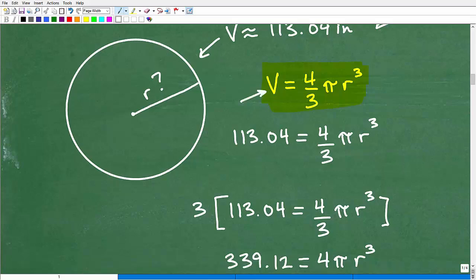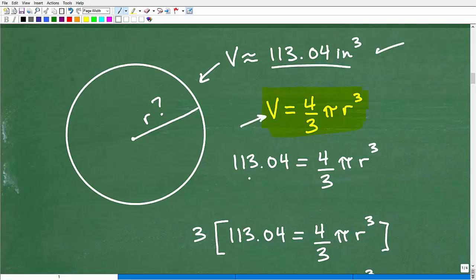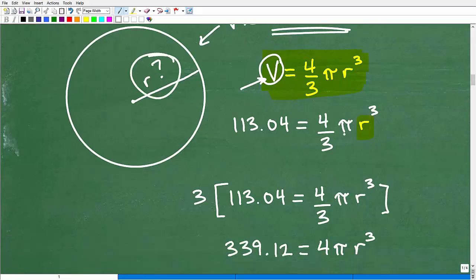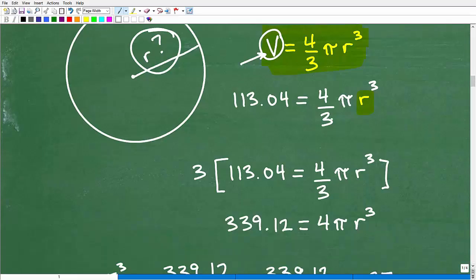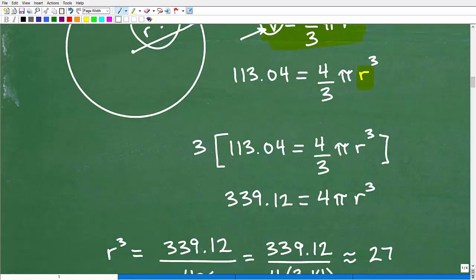All right, so the volume we know is 113.04 inches cubed. So I'm going to replace this V with the volume. So I have 113.04 is equal to 4 thirds pi r cubed. Remember, I'm trying to solve for r. That's an unknown. I don't have that information. That's what I'm trying to solve for. So now, best way to handle an equation like this is to get rid of this denominator. I don't want to deal with fractions. So if I multiply the entire equation by 3, I can get rid of that little fraction there. So that would be 3 times 113.04. That gives me 339.12. I'm just distributing here. 3 times 4 thirds. Okay, the 3's cross-cancel. That leaves me with 4 times pi r cubed.